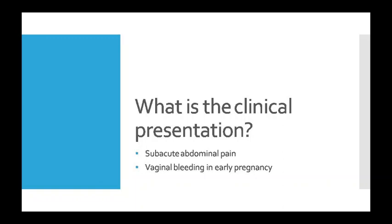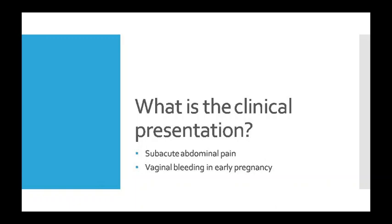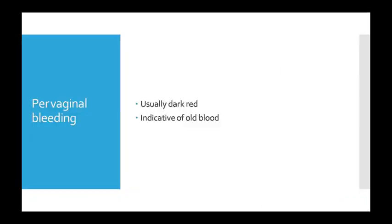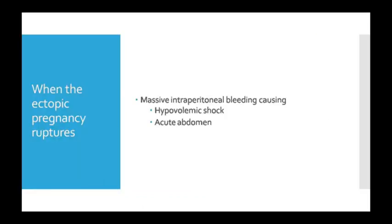Clinical presentation mein person ko subacute abdominal pain rehne lagta hai, aur early pregnancy mein vaginal bleeding hone lagti hai. Pregnancy mein bleeding aur pain ho raha hota hai. Abdominal pain pehle localized hota hai, phir iliac fossa mein ja sakta hai, aur kabhī shoulder tip pain ke roop mein bhi dikhta hai — kyunki free blood abdominal cavity mein diaphragmatic irritation karta hai. Dizziness ke symptoms bhi aate hain. Vaginal bleeding mein dark red color ki bleeding hoti hai jo old blood indicate karti hai.